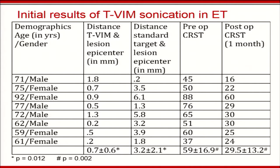Looking at the eight patients' demographics, the first column shows distance of the tractography-identified VIM to the actual lesion, the next shows standard targeting versus the actual lesion, and then pre- and post-operative CRST changes. The tractography-identified VIM was tightly correlated with the final lesion epicenter, confirming successful sonication of the tractography-identified VIM. The distance between standard targeting and the tractography-identified VIM was significant, and reduction in CRST was more than 50%.